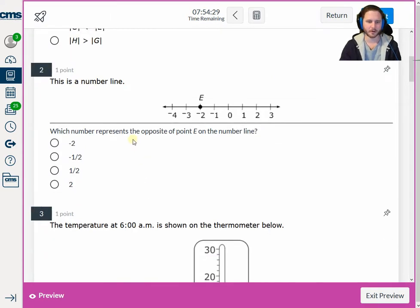For number 2, in this number line, what represents the opposite of letter e? The opposite of letter e is going to be positive 2. That's how number 2 was supposed to work.